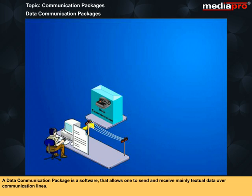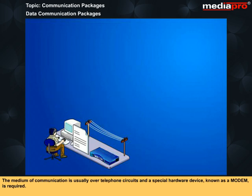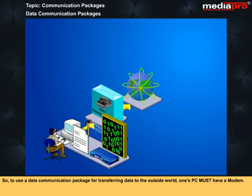A data communication package is a software that allows one to send and receive mainly textual data over communication lines. The data transfer may be between two points or messages may be sent through a network of computers and workstations. The medium of communication is usually over telephone circuits, and a special hardware device known as a modem is required. The modem, or modulator-demodulator, converts the digital on-off electrical pulses produced by computers into a form that can be accepted and transmitted by many existing telephone lines, and vice versa. To use a data communication package for transferring data to the outside world, one's PC must have a modem.